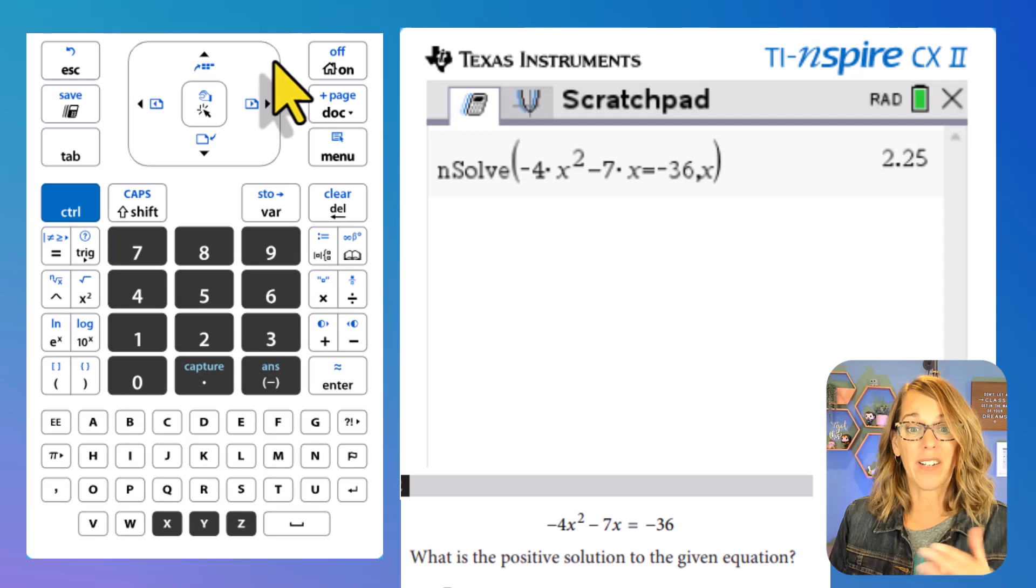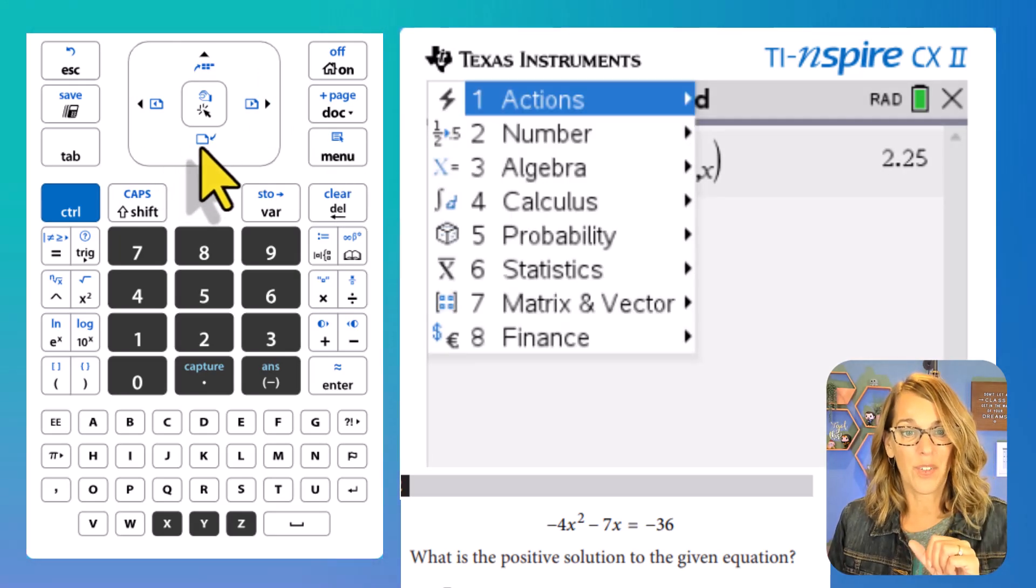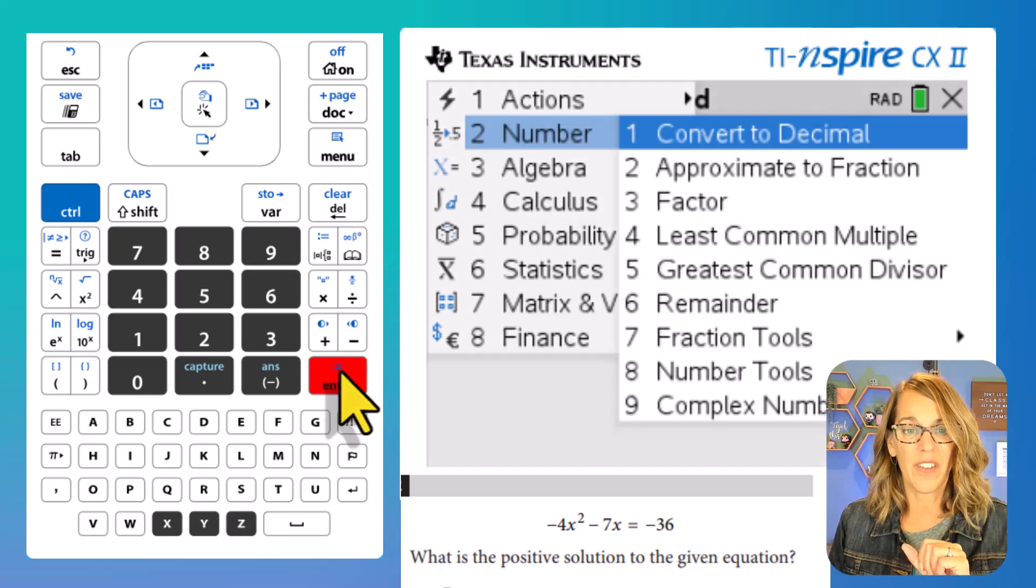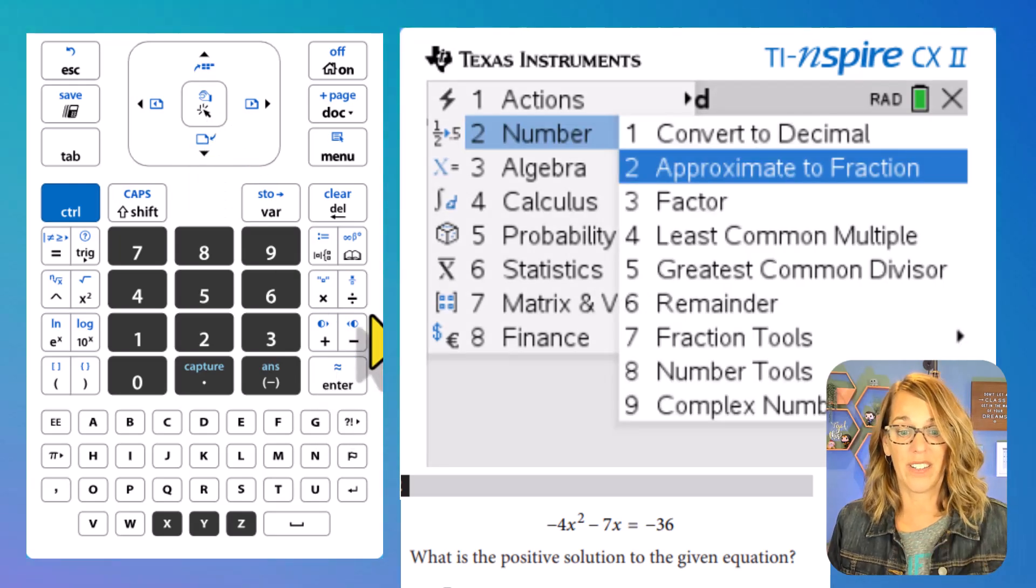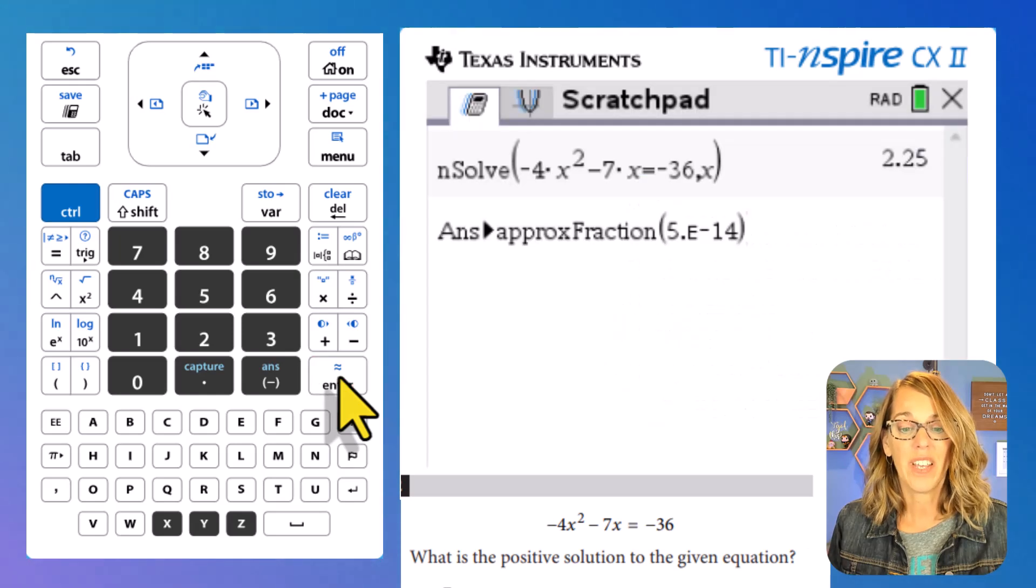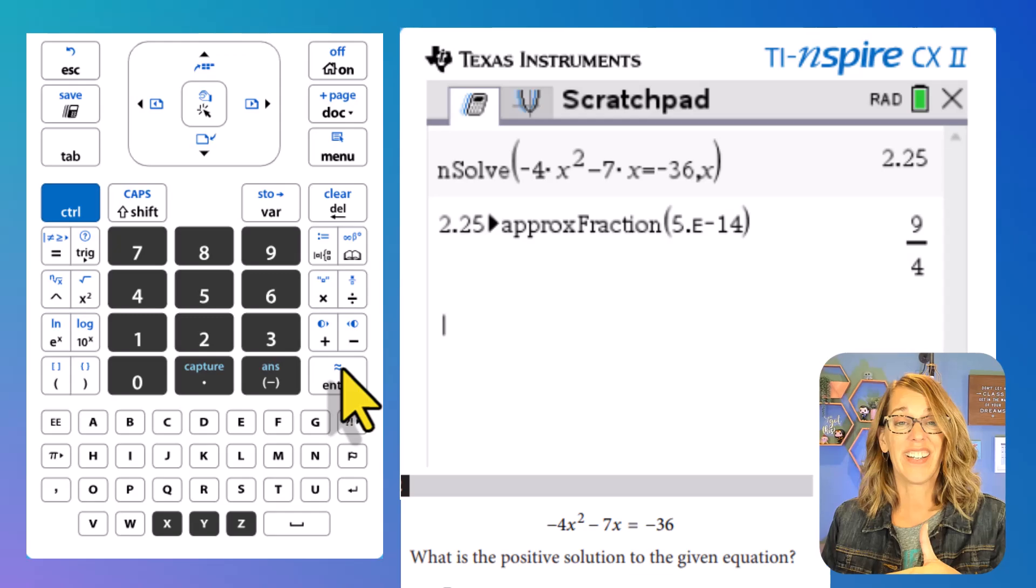To do that, we go right back to menu. So right back to menu. This time we want to change that number answer. So we're going to arrow down to number two and then enter. And we want to approximate this to a fraction. So enter for number two, and then enter again. And we end up with the solution of nine fourths.